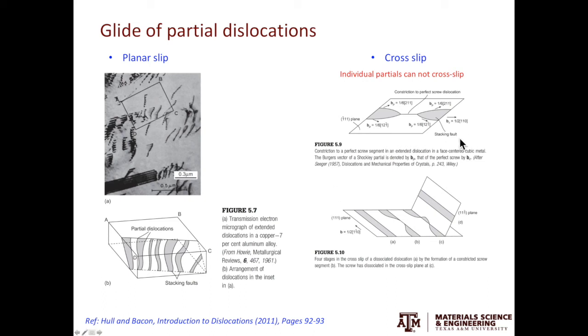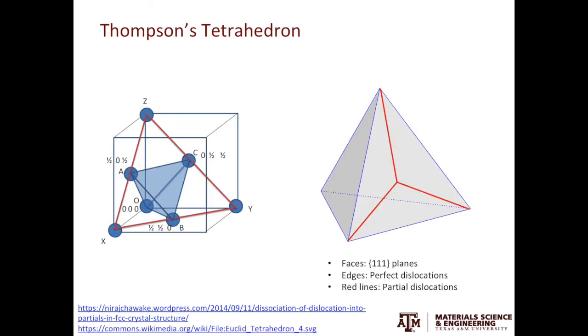First of all, individual partial dislocations cannot cross slip. In order to cross slip, the two partials have to combine into one perfect dislocation. This is called constriction. The constricted perfect dislocation can cross slip, then dissociate again on a different slip plane. We will discuss slip, cross slip, and the double cross slip of dislocations in one of the future videos.